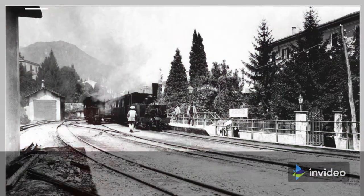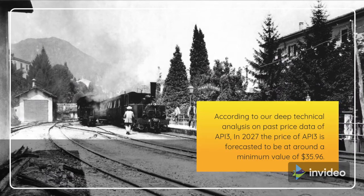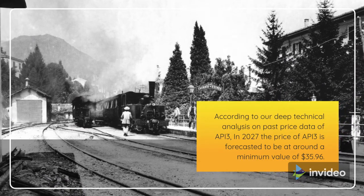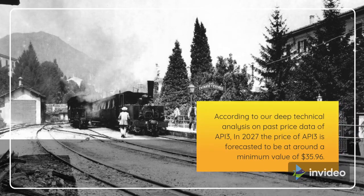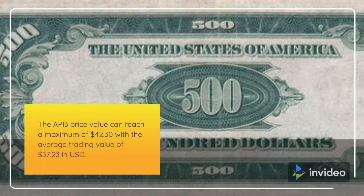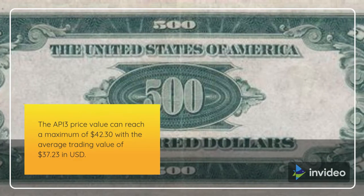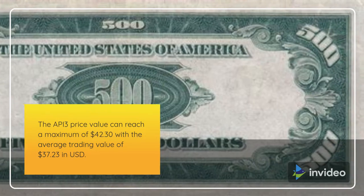API 3 Price Prediction 2027. According to our deep technical analysis on past price data of API 3, in 2027 the price of API 3 is forecasted to be at around a minimum value of $35.96. The API 3 price value can reach a maximum of $42.30 with the average trading value of $37.23.